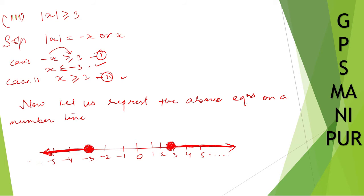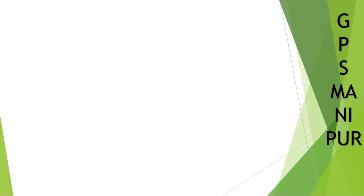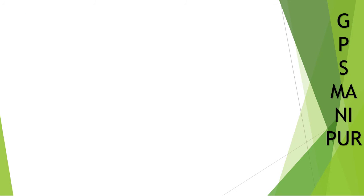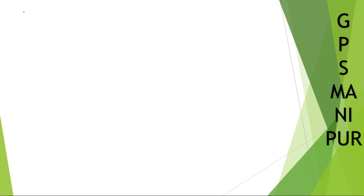That's all. You can write down P and Q or anything you want. Let us do Roman number 4.